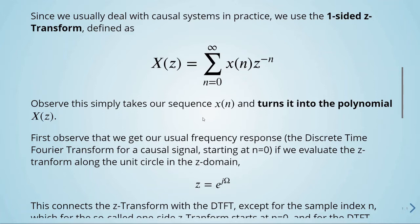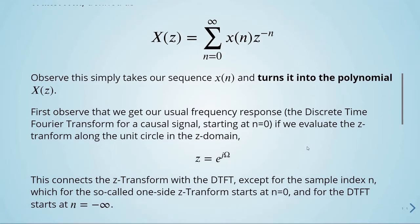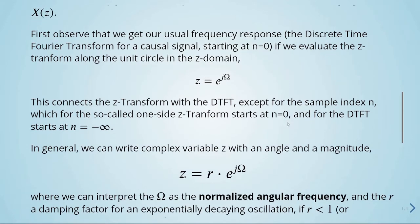We can recover our usual frequency response — the DTFT, the discrete-time Fourier transform — for a causal signal where n starts at zero, by evaluating the Z transform along the unit circle in the Z domain. When z is equal to e to the power of j·Ω, we are evaluating along the unit circle, and this connects the Z transform with the DTFT, except that the one-sided Z transform starts at n equals zero whereas the DTFT starts at n equals minus infinity in general.